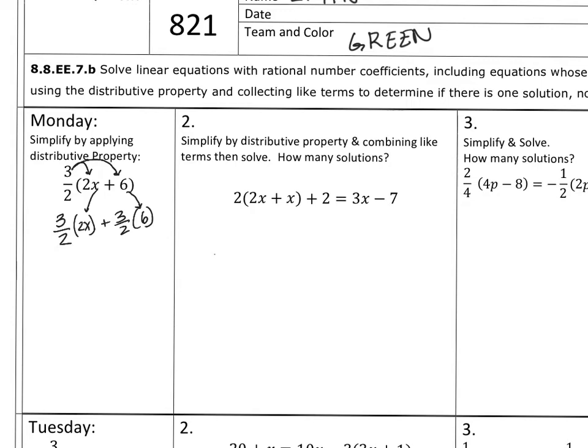So I have 3 halves times 2x. You would multiply straight across. So 3 times 2x is 6x. 2 times the denominator of 1 is just 2. Plus 3 times 6 is 18. 2 times 1 is 2.